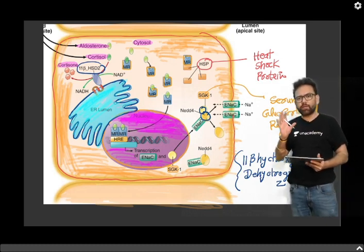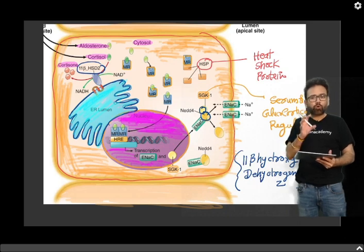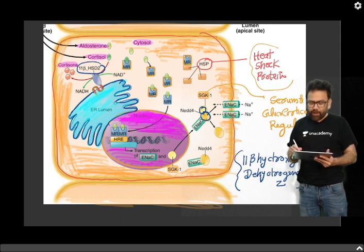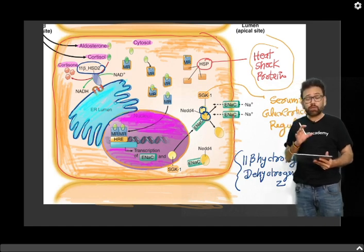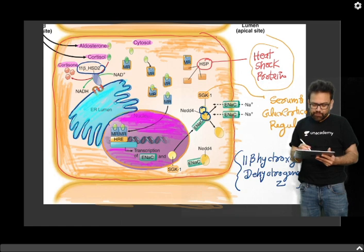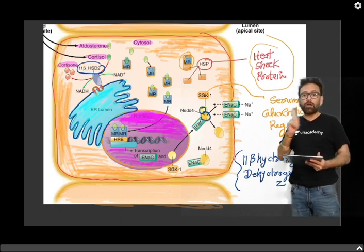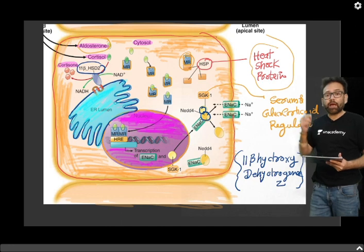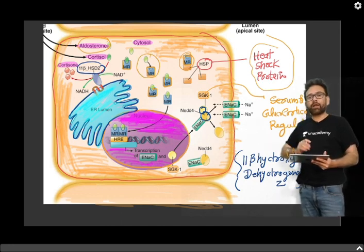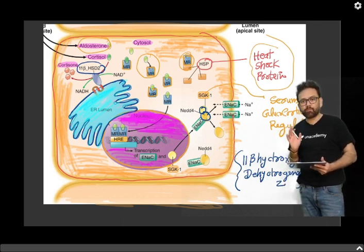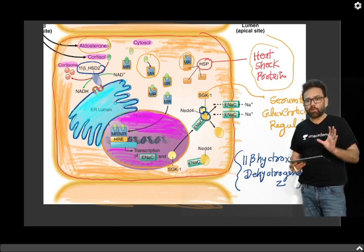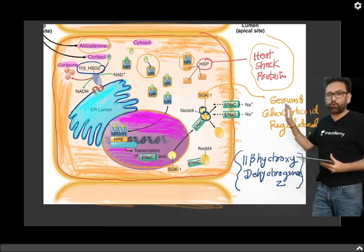To understand steroid action: normally, mineralocorticoid receptors are attached by heat shock protein. So one thing should be clear — why are mineralocorticoid actions not working normally? Because when there is no aldosterone, when there is no mineralocorticoid, these mineralocorticoid receptors are attached by heat shock protein. But this is only when there is no aldosterone. What will happen if aldosterone comes?